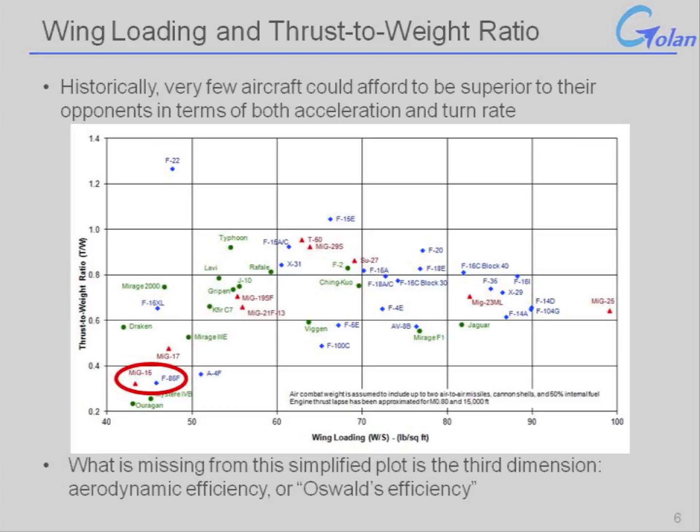On the surface of it, it looks like the MiG absolutely has some wonderful advantages. However, in practice, as some of us know, there were two major elements that the Sabre crews had going for them: one was superior training — far superior training at the time — and the other was control, which we'll talk about separately a little bit later.